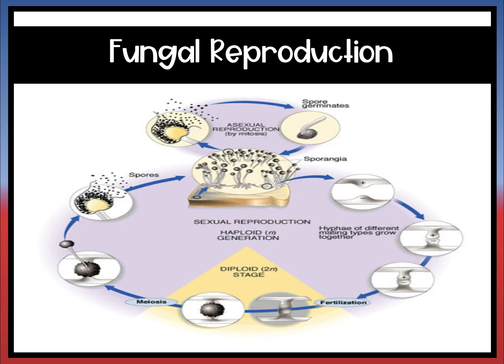This is a red mold example of fungal reproduction. You can see that there's both asexual and sexual reproduction happening. When spores are used it is asexual, and when gametes are used it is sexual.